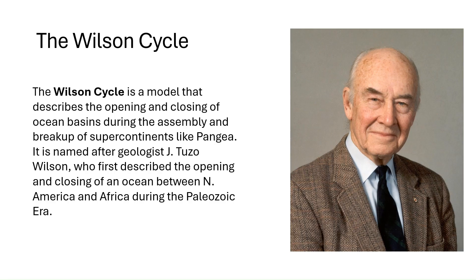The Wilson Cycle describes the sequence of geological processes involved in the formation, evolution, and eventual closure of ocean basins over hundreds of millions of years. Named after the Canadian geophysicist J. Tuzo Wilson, the Cycle illustrates how tectonic plate movements cause continents to break apart, form new oceans, and then converge again, leading to mountain building.